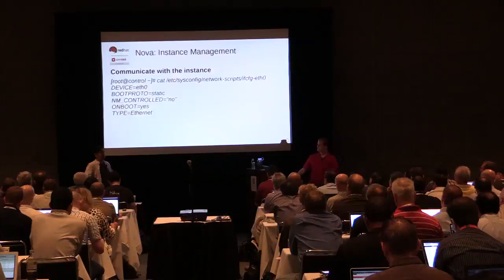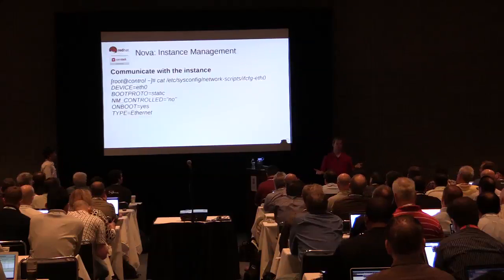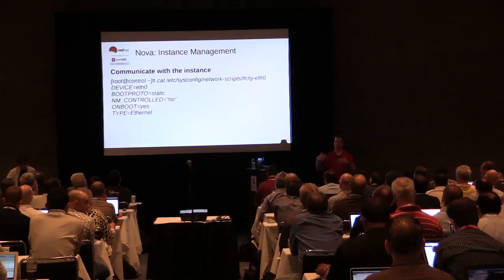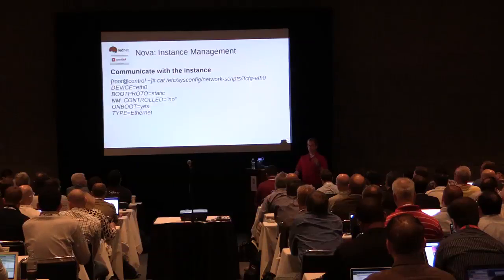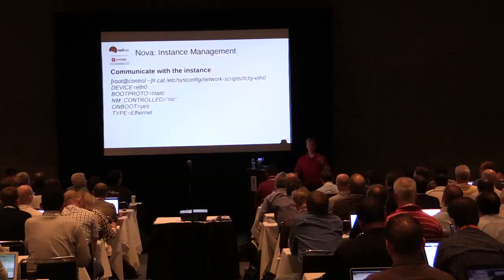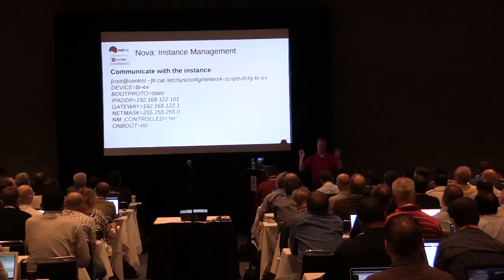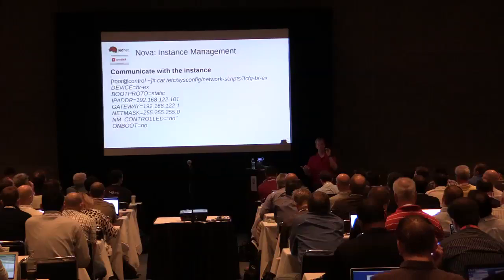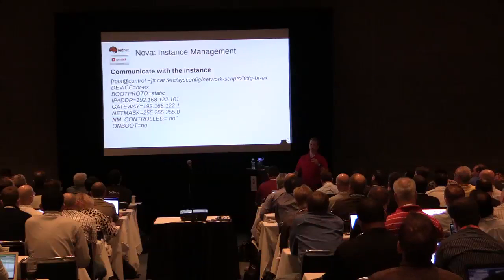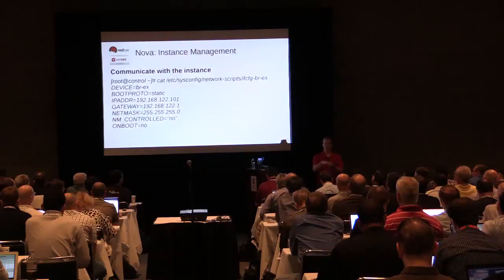Our instance is running on a virtual network, but that's an unroutable network — we can't get to it from anywhere. We need to connect the outside world into this network. eth0 represents my physical interface on my network node, and brex is a predefined bridge in Open vSwitch. We need to plug these two together — that's called adding a port to Open vSwitch. We take eth0 and add it as a port into Open vSwitch, and we also have to move the IP address.